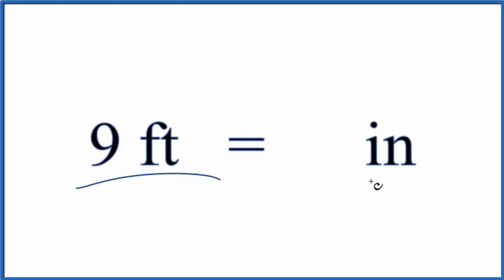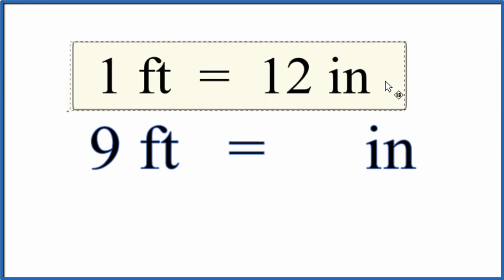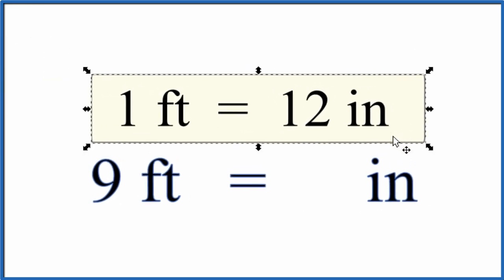Let's convert 9 feet into inches. The first thing you need to know is that 1 foot equals 12 inches. So every 1 foot we have 12 inches.